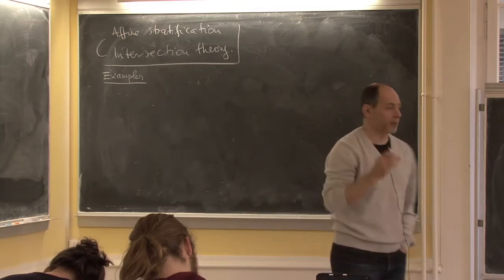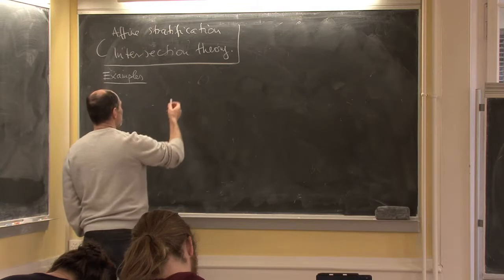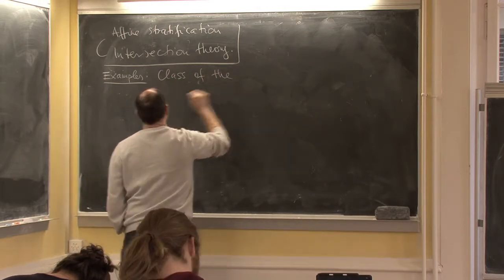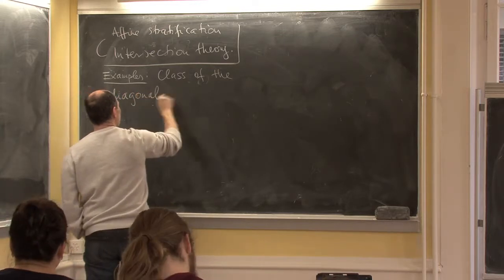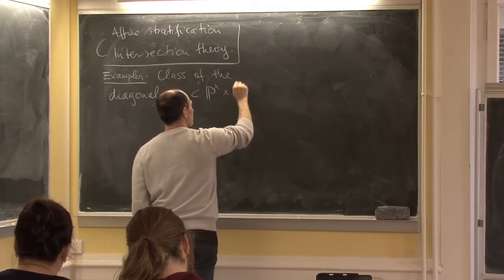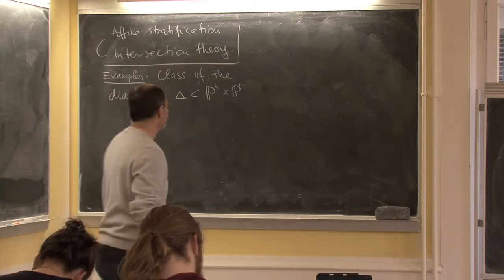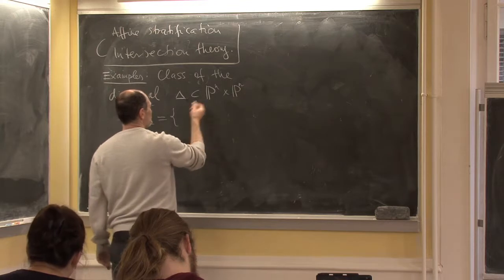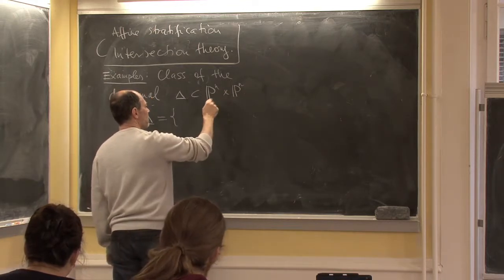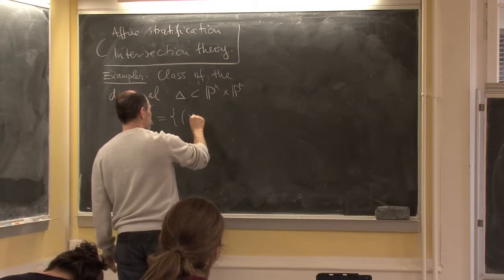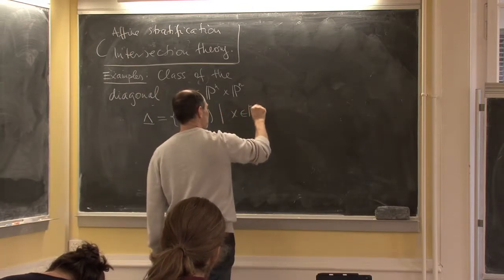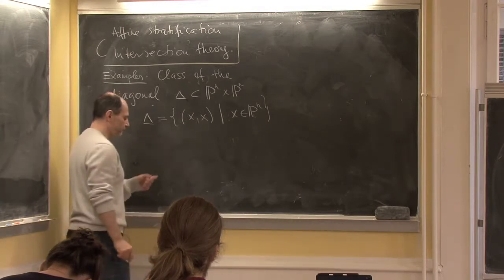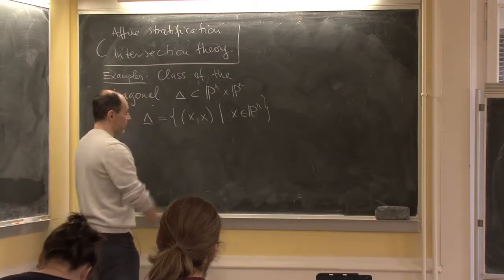So what else can we do? One thing that arises is the following: what is the class of the diagonal? I think I haven't done this. The diagonal delta in, say, Pn cross Pn — although this method can be generalized. The diagonal just means the points where you take the same point. So this is a sub-variety, and it's a reasonable question to determine its class in the Chow ring.